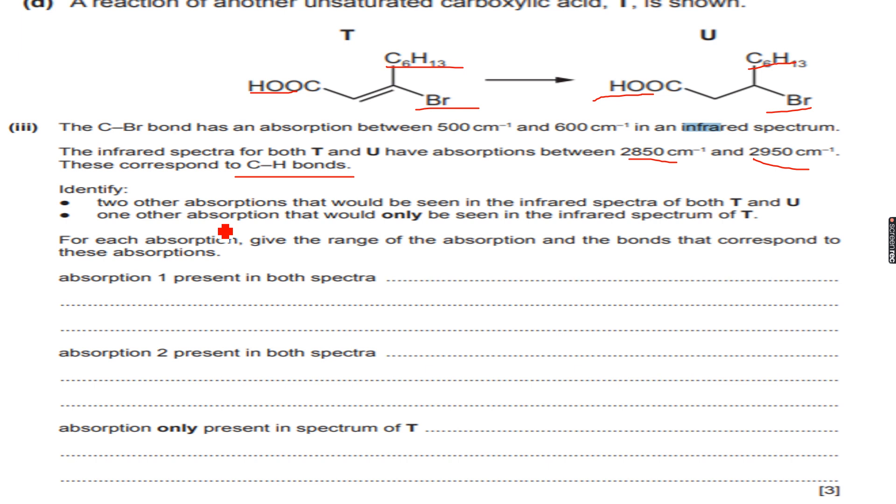and one other absorption that would only be seen in the infrared spectrum of T. For each absorption, give the range of the absorption and the bonds that correspond to these absorptions. So we have to see two common and one uncommon. We know that for T and U, the Br is common, but they have already talked about the Br, so we cannot include it here. We know that the CH bond is common, the carbon-hydrogen bond, but they have also included that.